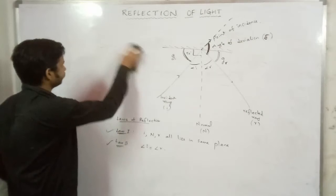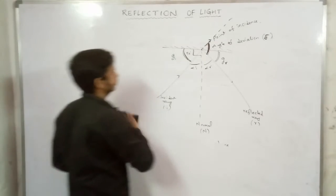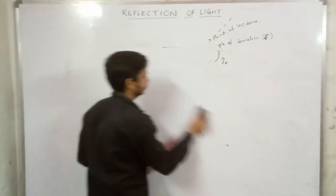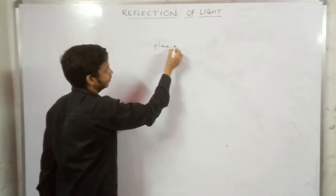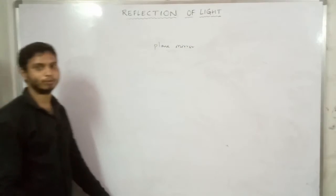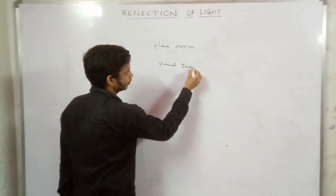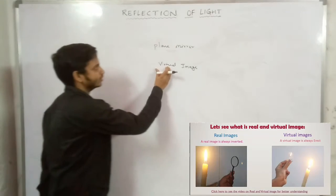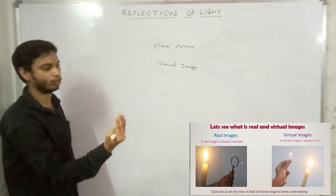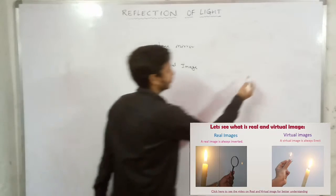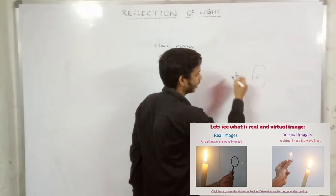Now let's take a plane mirror. For a plane mirror, the type of image formed is a virtual image. A virtual image is one that cannot be caught on a screen. The image appears to be inside the mirror — that is the virtual image.